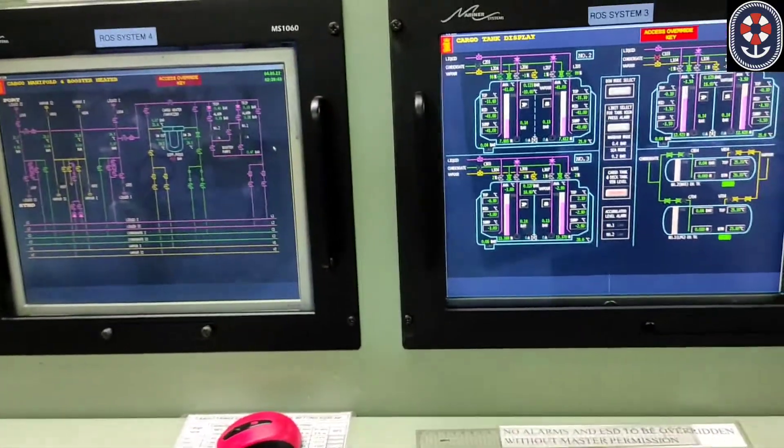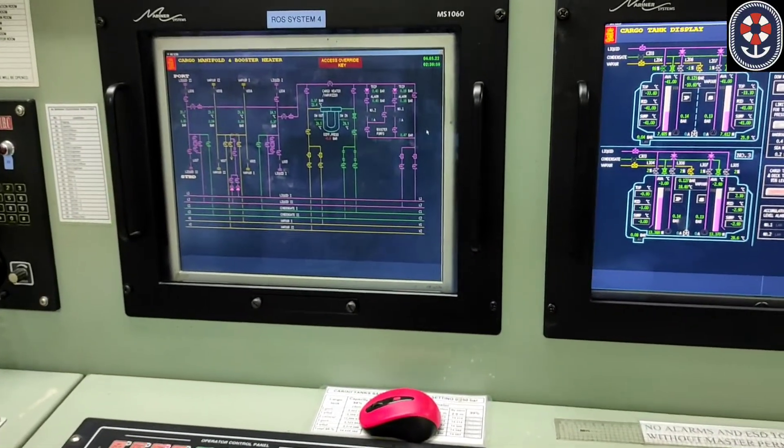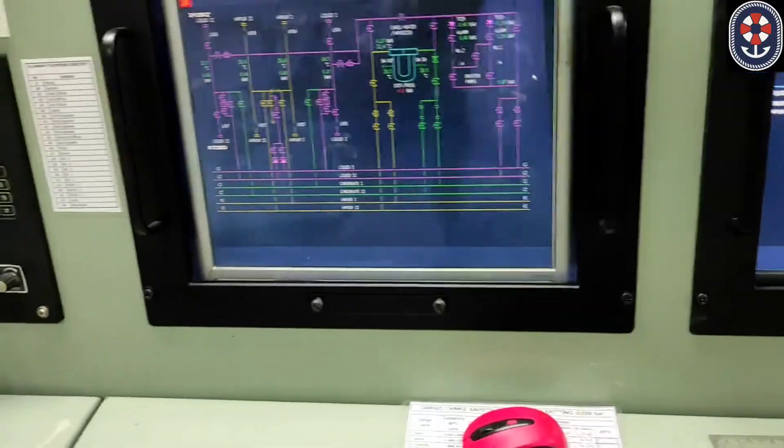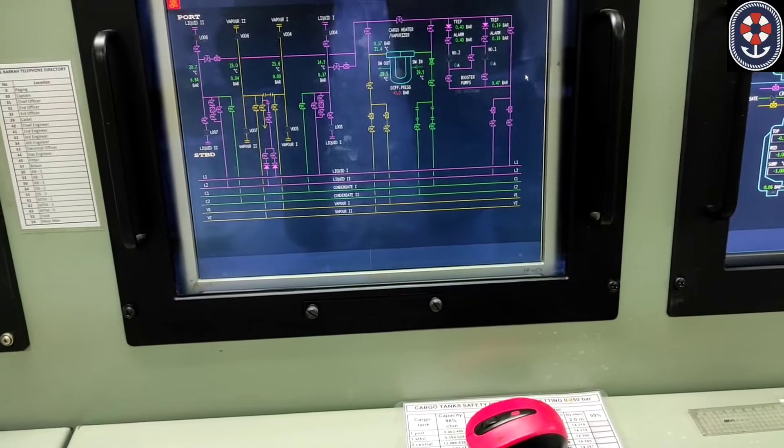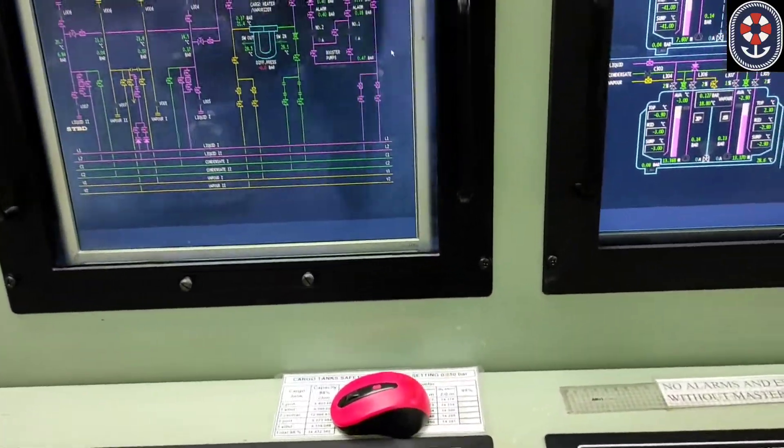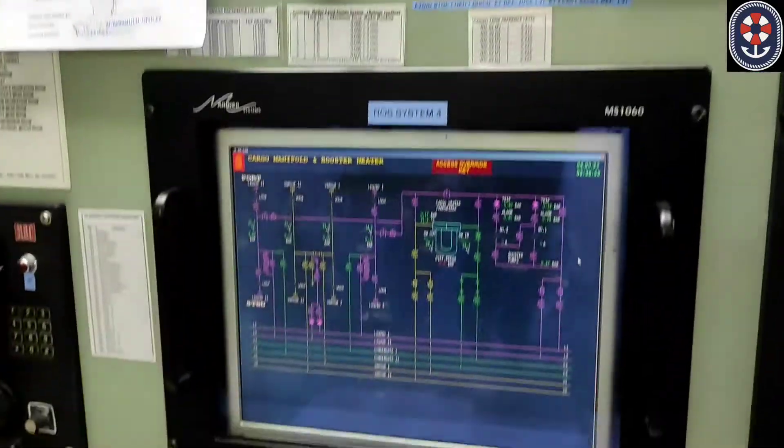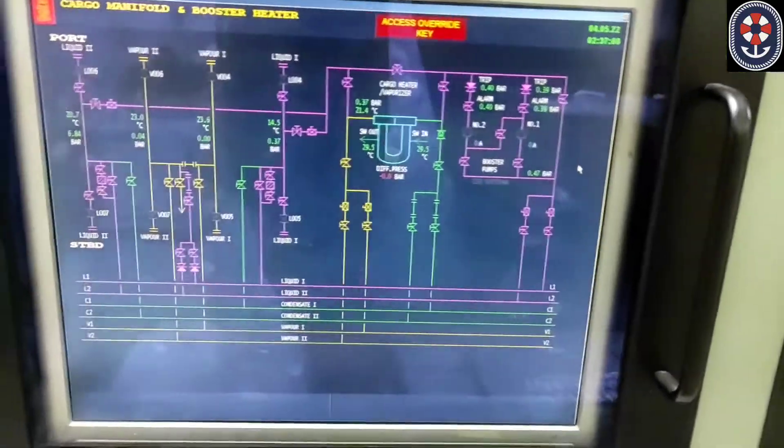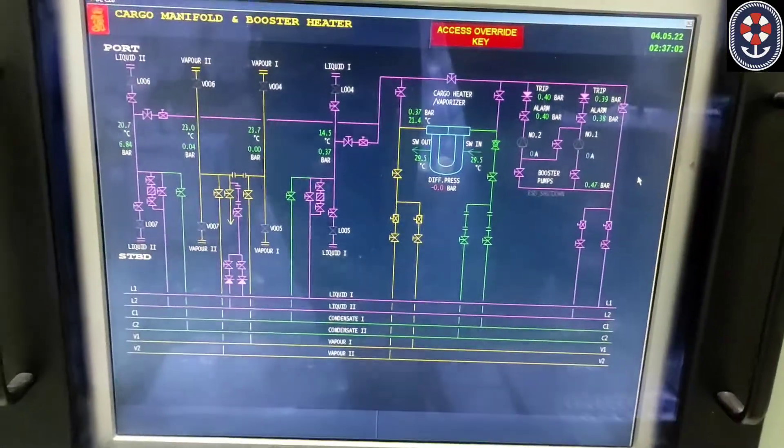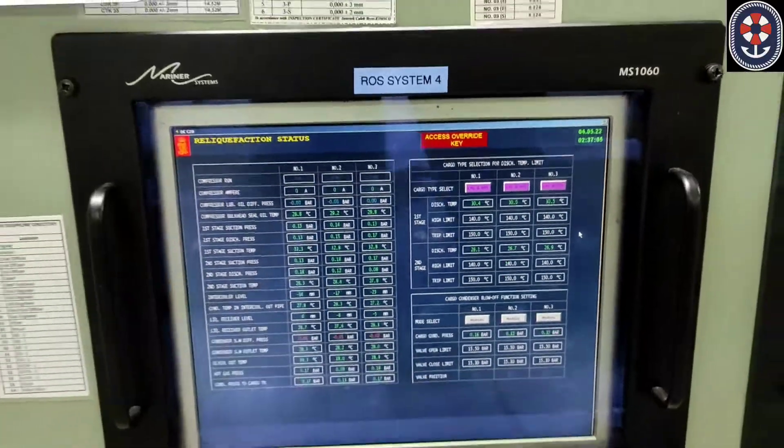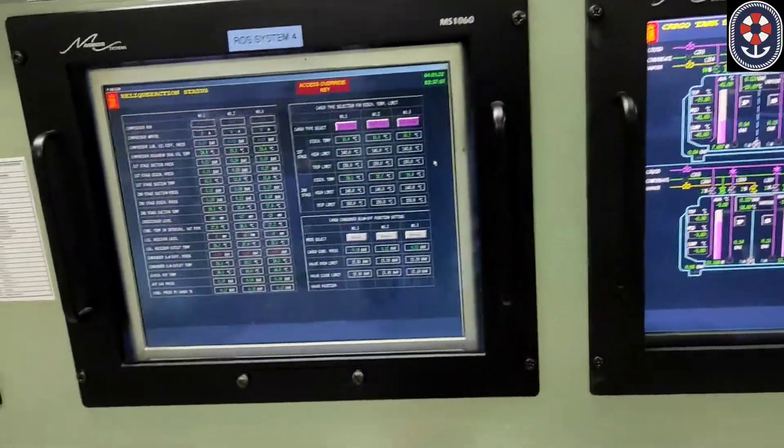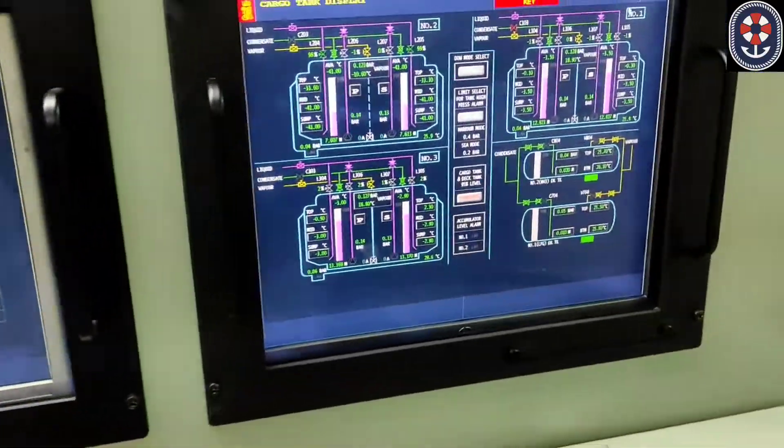Gauging and local things are there, but still you don't have—unlike chemical and oil tankers—you cannot go and take ullaging from UTIs and this. So here, different settings. This is for cargo manifold and booster. We can change it to reliquefaction, how much compressors are running, everything you can see here.